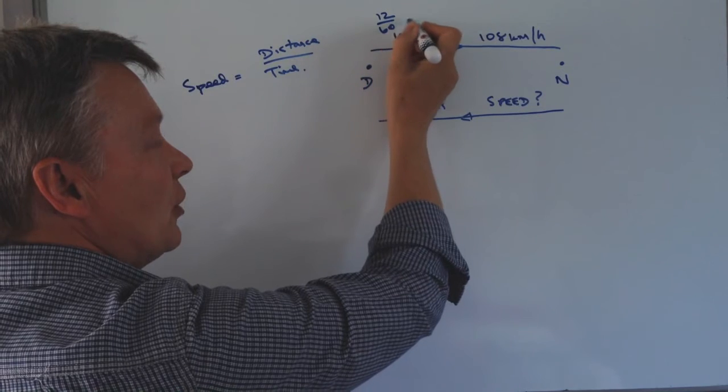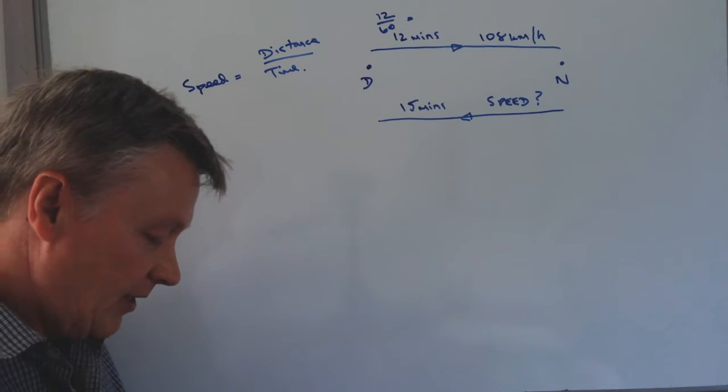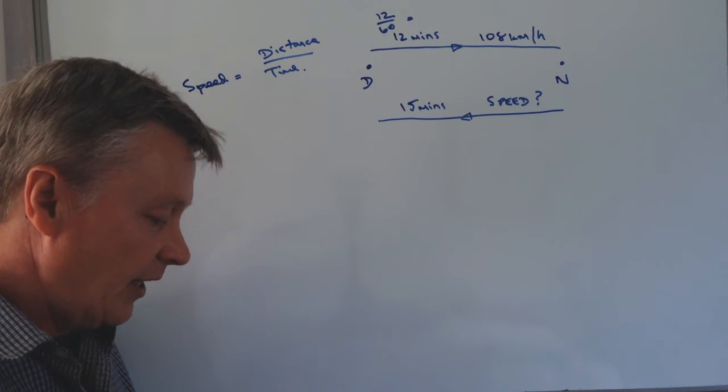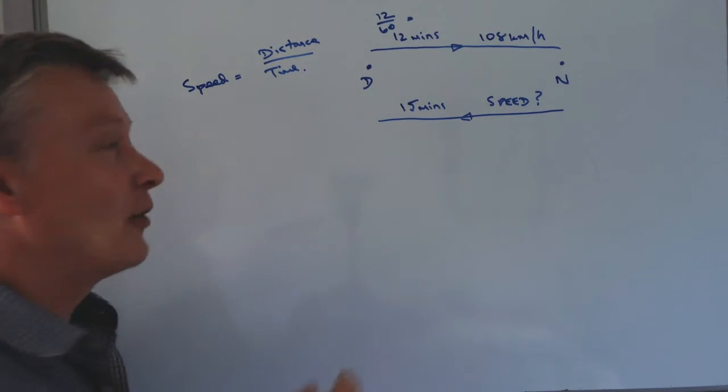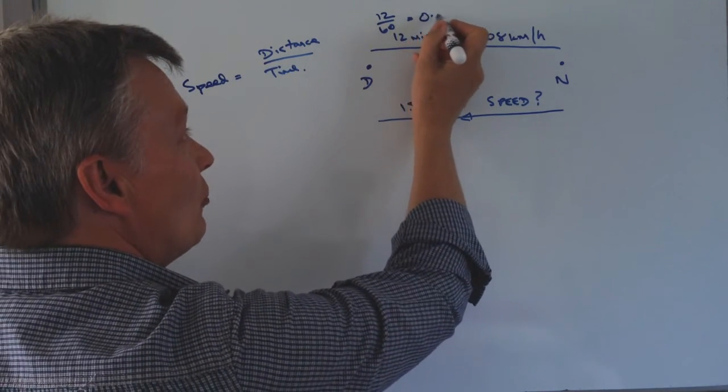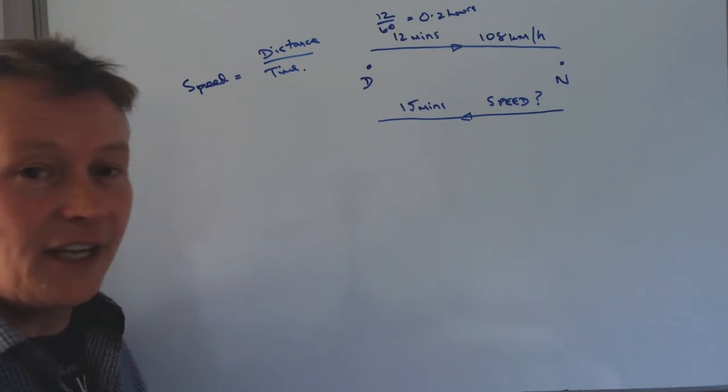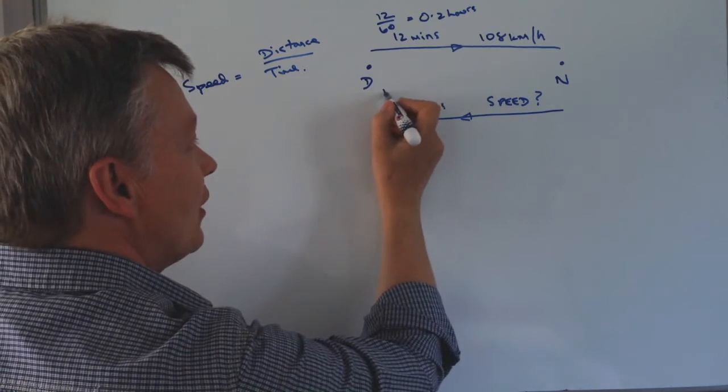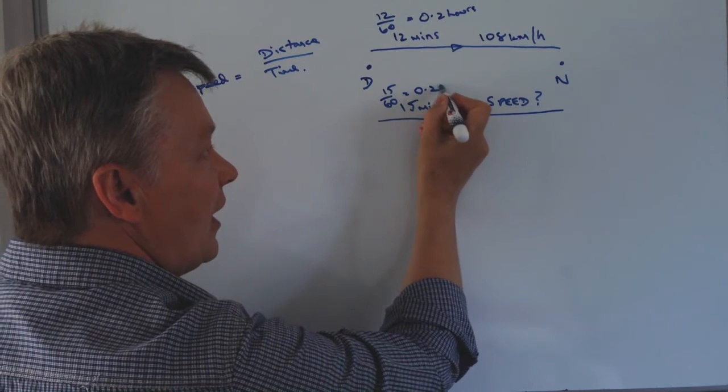So that's 12 out of a group of 60. So if I put that into my calculator, that's going to give me one-fifth of an hour, or if you like it's 0.2 hours. And it's really important in all of these that you do this conversion to make sure that you're talking with the same units.